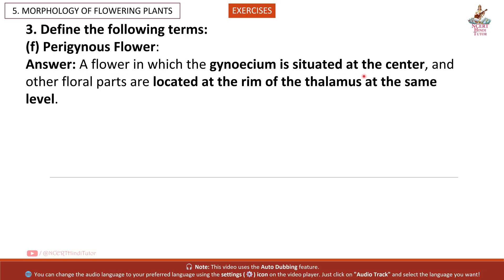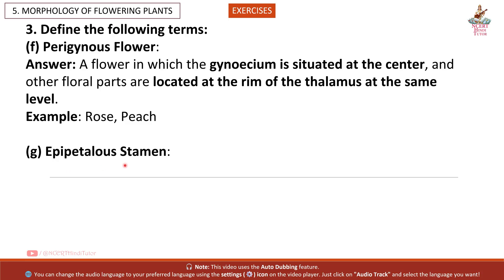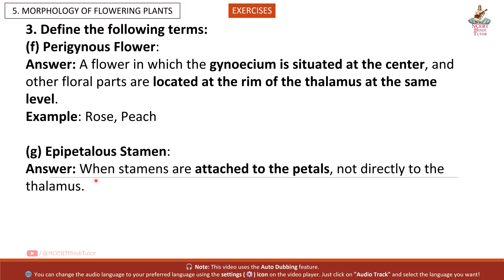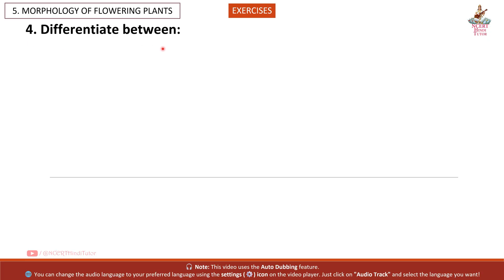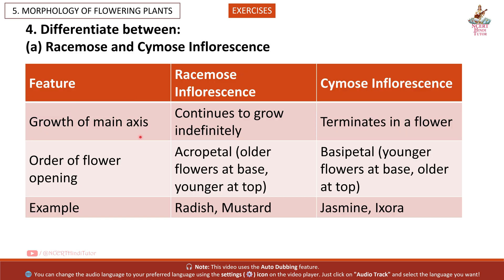(f) Perigynous flower: a flower in which the gynoecium is situated at the centre and other floral parts are located at the rim of the thalamus at the same level. Example: rose, peach. (g) Epipetalous stamen: when stamens are attached to the petals, not directly to the thalamus. Example: brinjal, tomato.